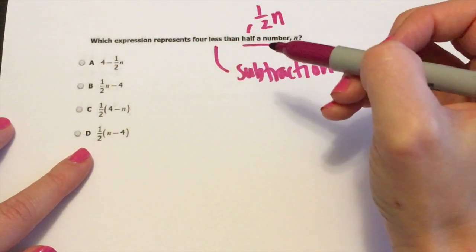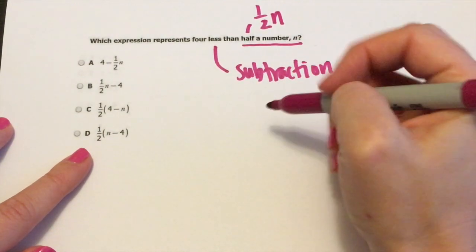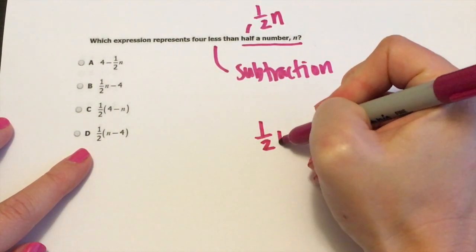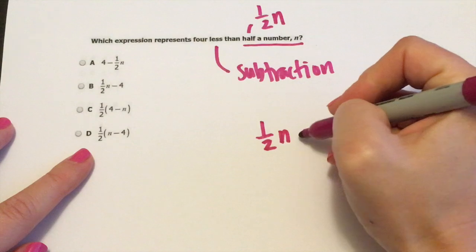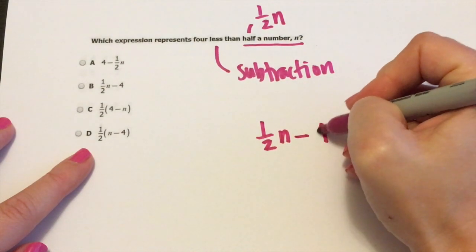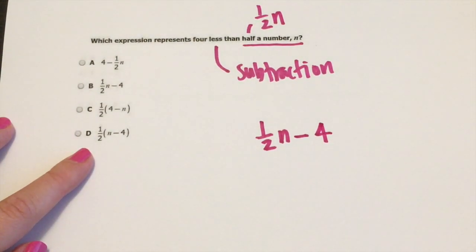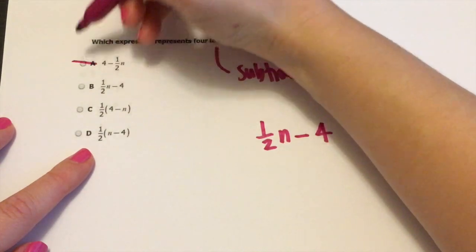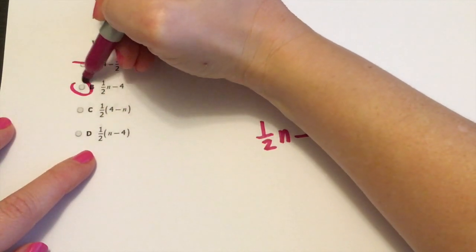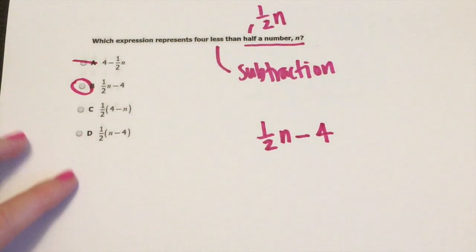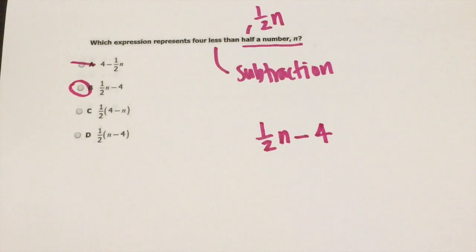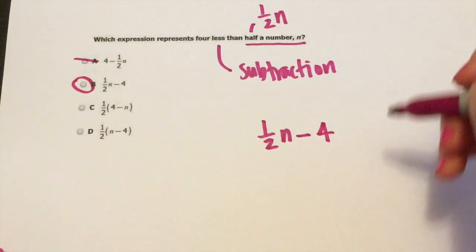So we're going to be writing these together. So like one half n. And it says four less than half a number. So we're going to do one half n four less. So it's going to be subtraction minus four. Now let's see. So it's not this one has to be B here. So that was number one.